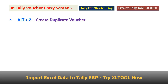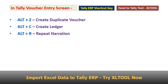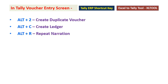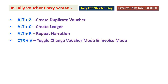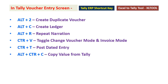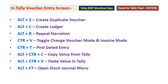Alt 2: Create Duplicate Voucher. Alt C: Create Ledger. Alt R: Repeat Narration. Control V: Change Voucher and Invoice Mode. Control T: Post Dated Entry. Alt Ctrl C: Copy Value from Tally. Alt Ctrl V: Paste Value in Tally. Alt F7: Open Stock Journal Menu.